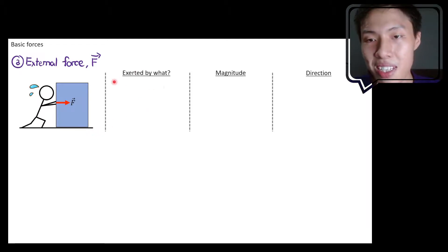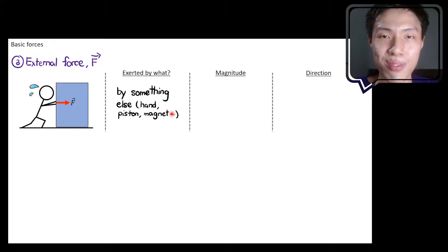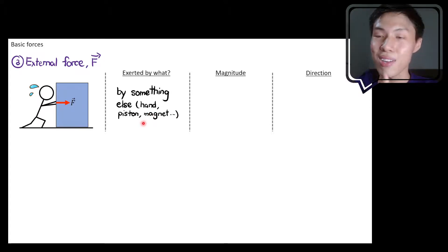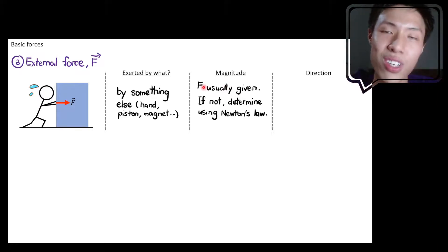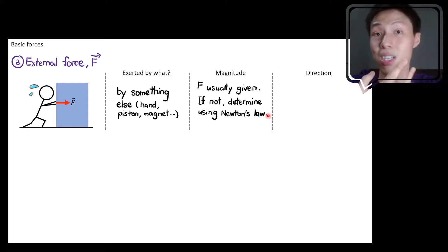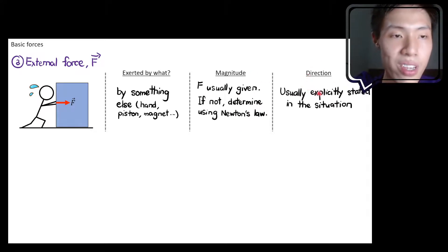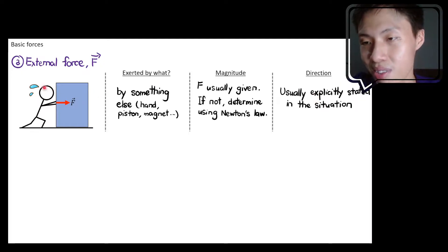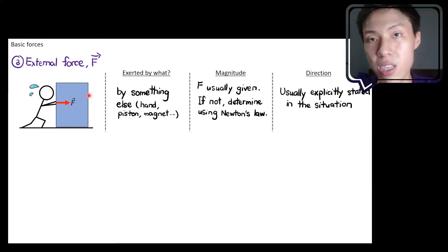External force can be exerted by your hand, a piston, a magnet, a stick, a fan — as long as it's not Earth, not a rope, not a rough surface, and not a surface. The magnitude for external force is usually given — if a human is pushing, they'll typically tell you how much force. If not given, determine it using Newton's laws. For direction, it's usually explicitly stated; in this case the human is pushing horizontally, so the force points in that direction.